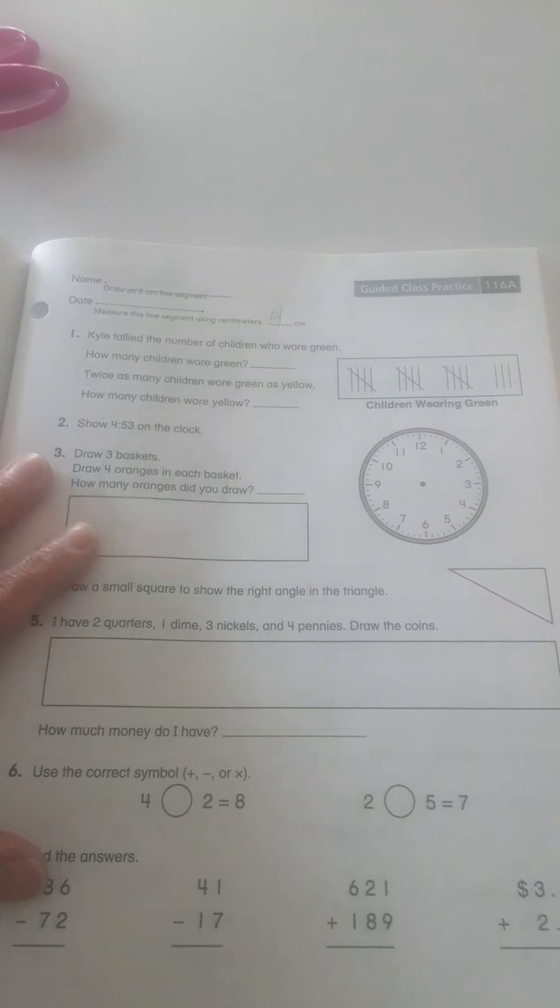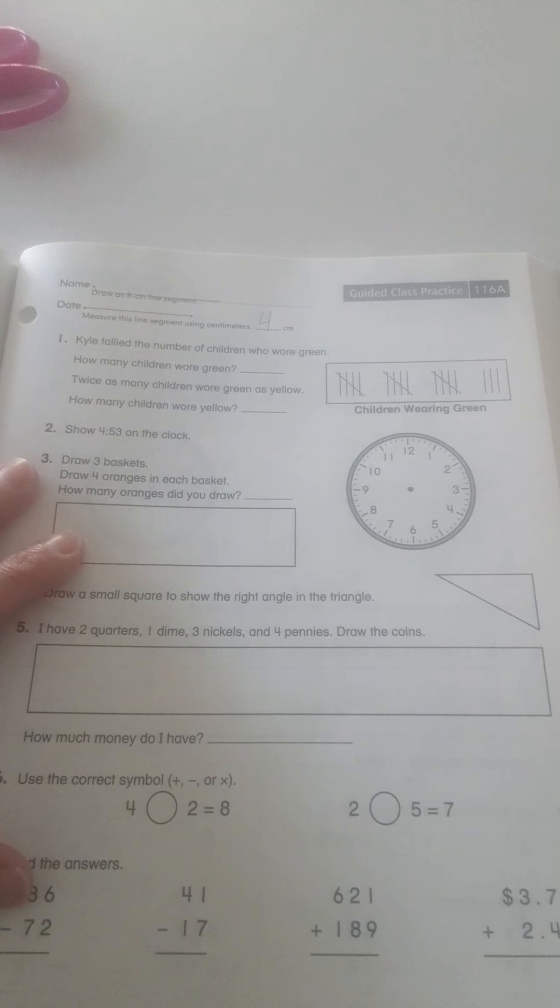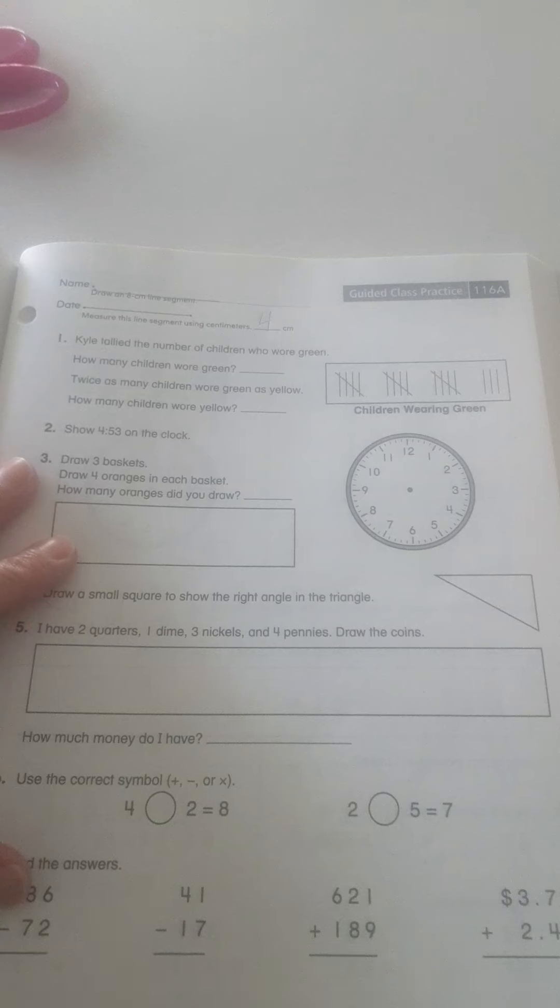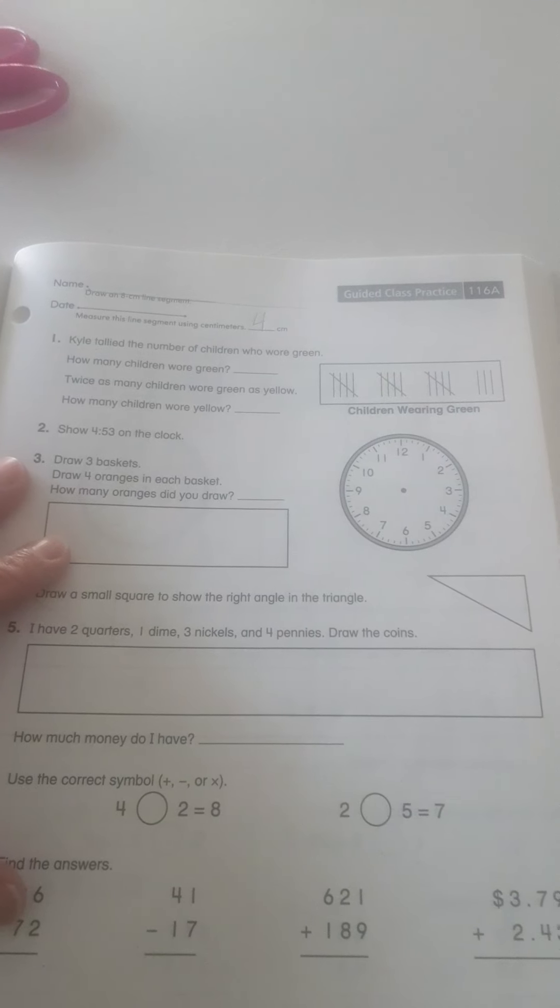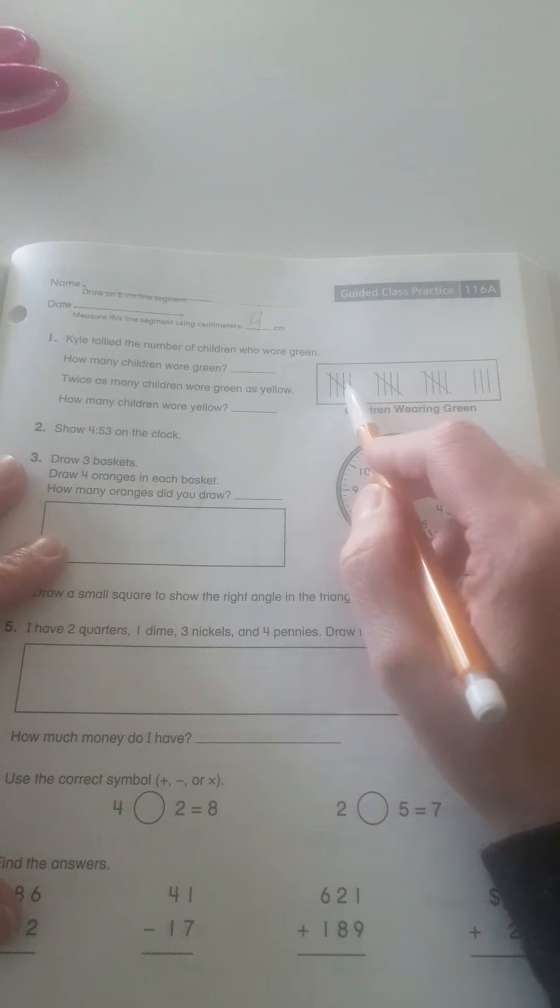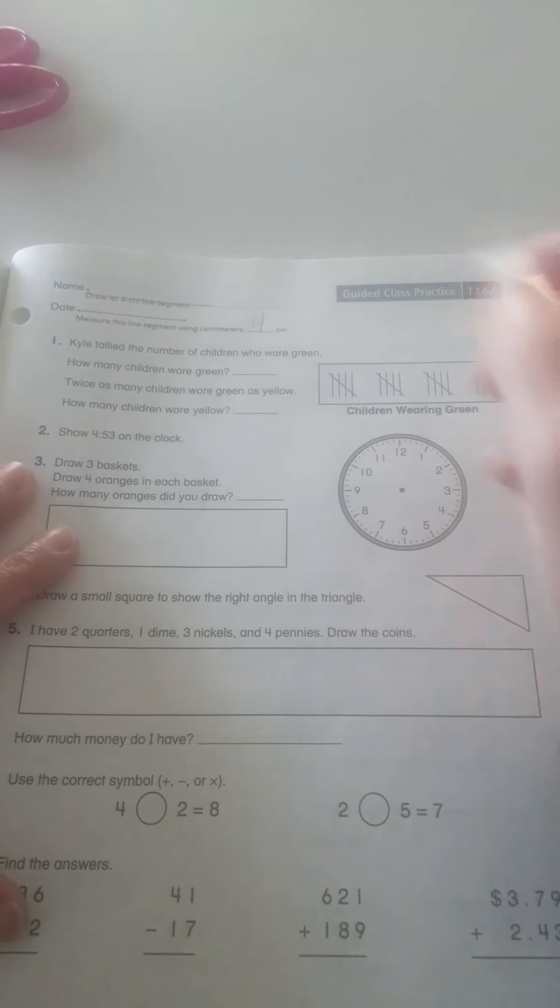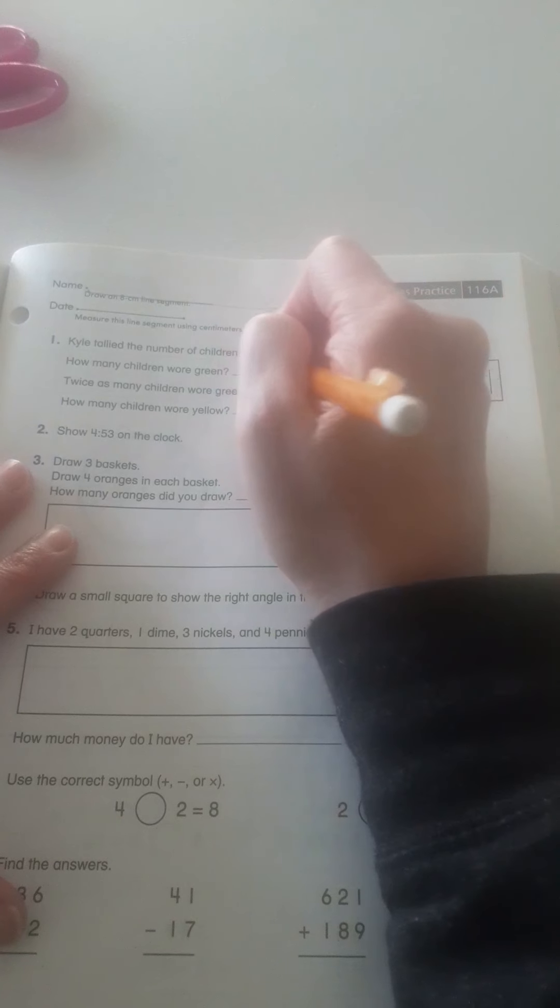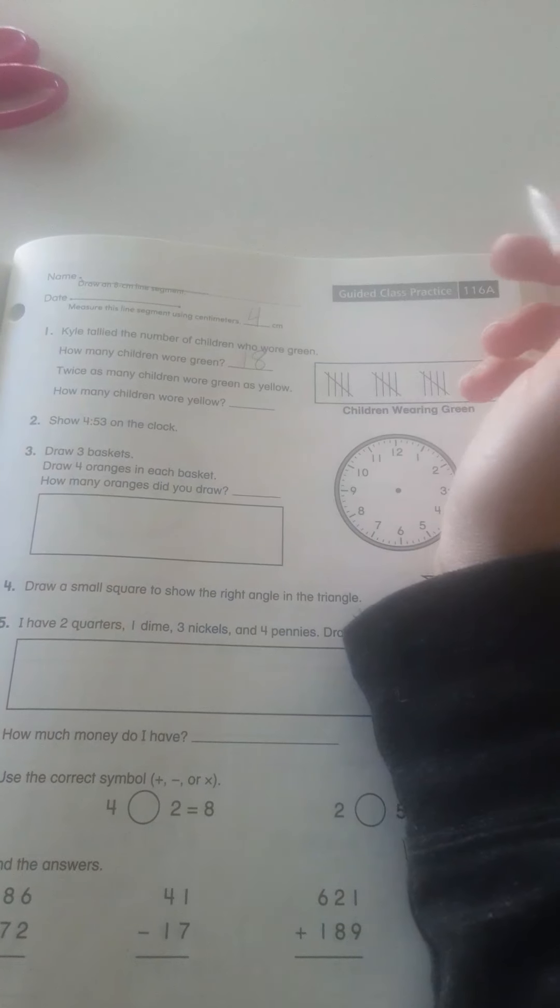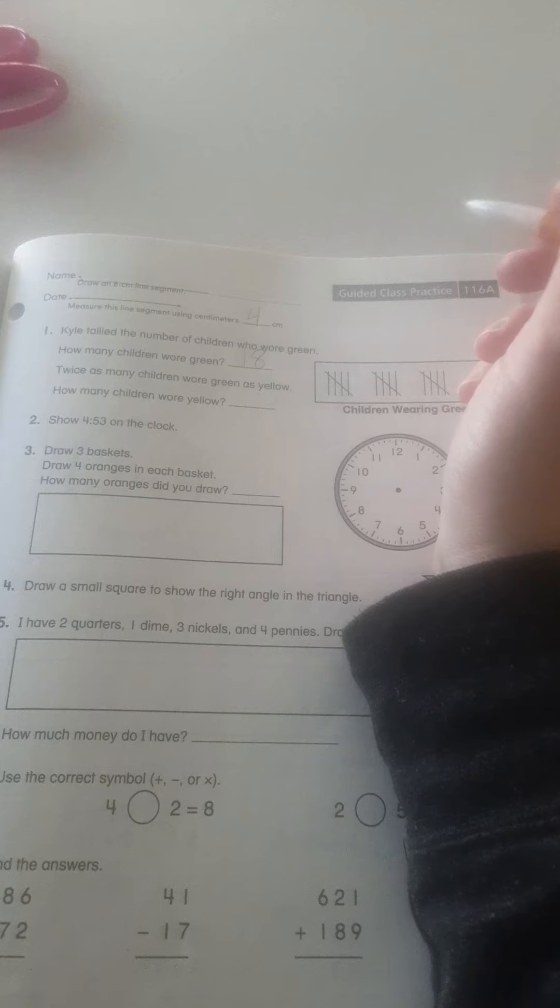Alright, Kyle tallied the number of children who wore green. How many children wore green? Well, we have to count by 5. 5, 10, 15, 16, 17, 18. That's how many wore green.